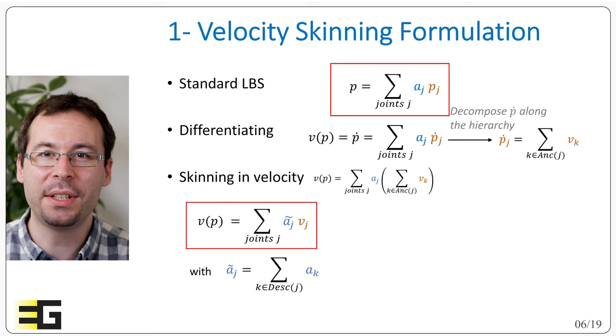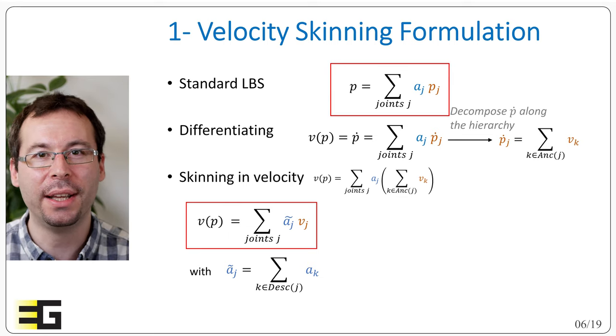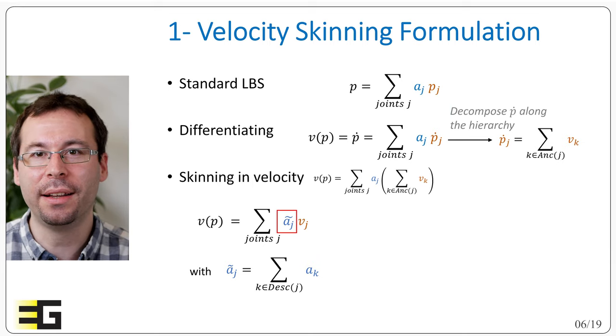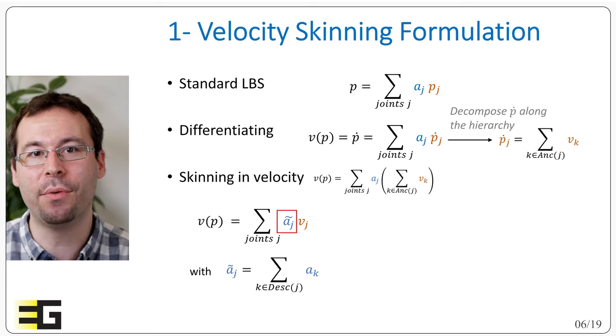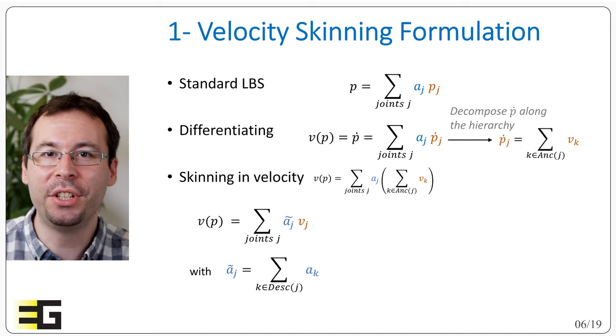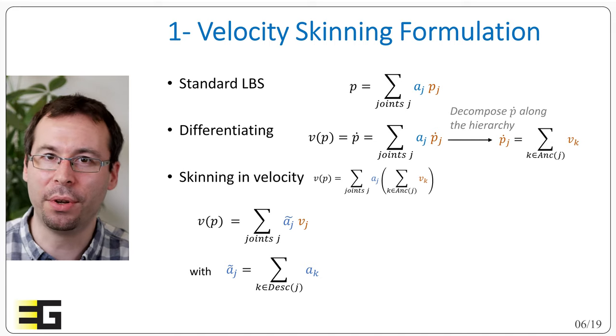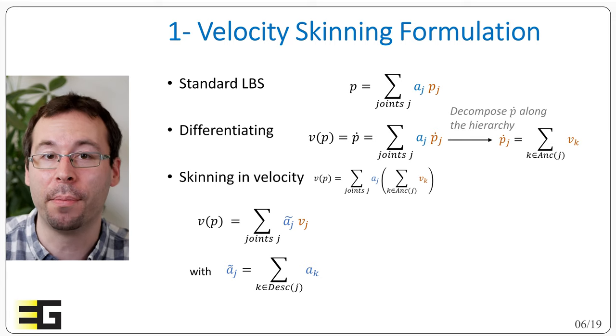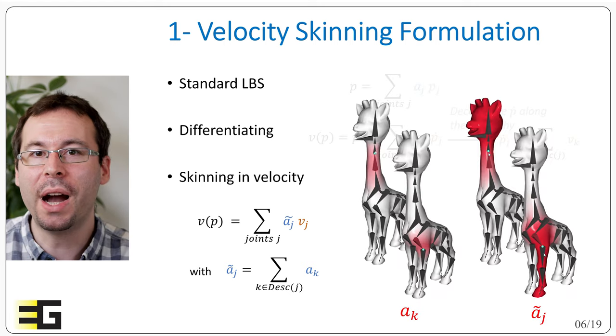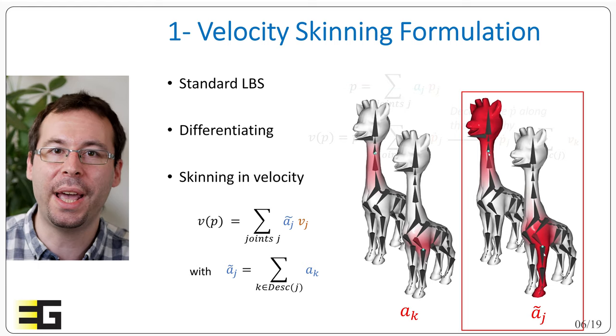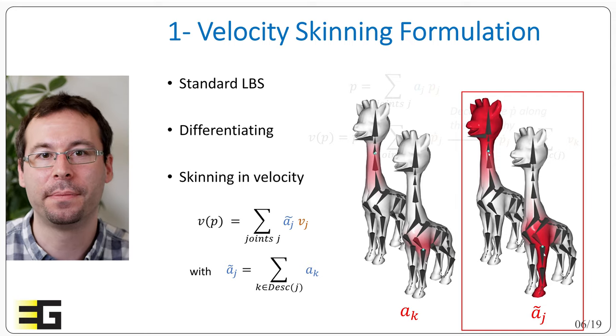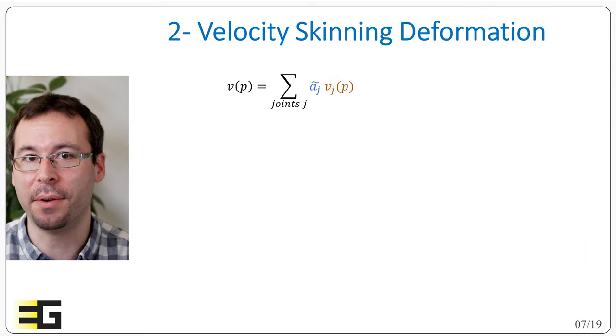So this formula is interesting because it's very similar to the linear blend skinning relation. It's a weighted sum of velocities. But now we have some modified weights, a tilde, but these are fully deriving from the standard skinning weights. We can however note that this time it's not a barycentric averaging. The sum of the a_j tilde doesn't sum up to 1. This is due to the fact that the relative velocities are actually summing up. So basically the velocity skinning weights are still varying between 0 and 1, but while the a are very sparse along their bones, the a tilde express the influence of a bone along the descendants of the hierarchy.